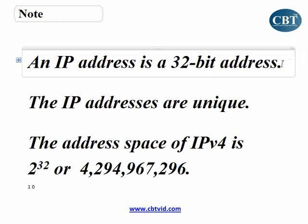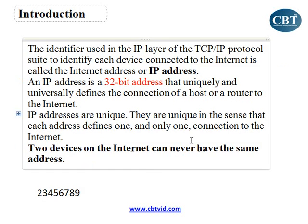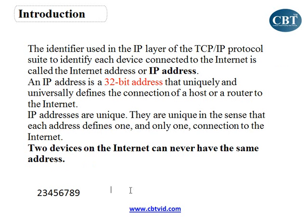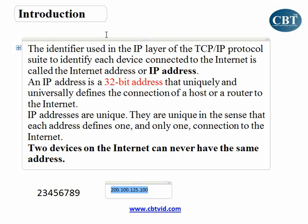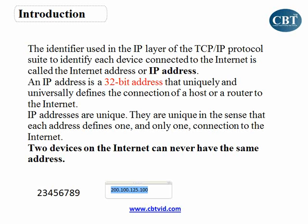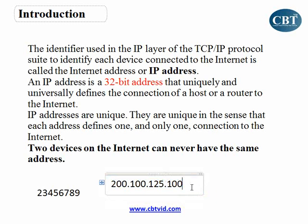IP address is a 32-bit address and a unique address. What is the structure of an IP address? If you look at an IP address, it can be something like 200.100.125.100. So this is an example of an IP address — this is the structure of an IP address.